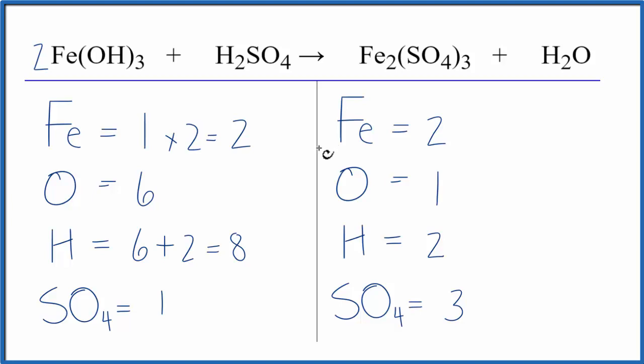Okay, we have the irons fixed. Let's leave the oxygens and hydrogens till last. Let's do the sulfate. We have three of these sulfate ions, SO₄, here and one here. So we'll put a three in front of the H₂SO₄.